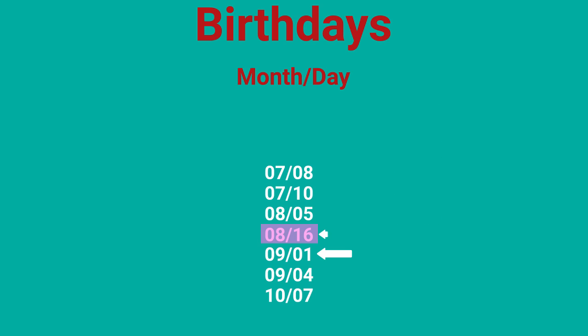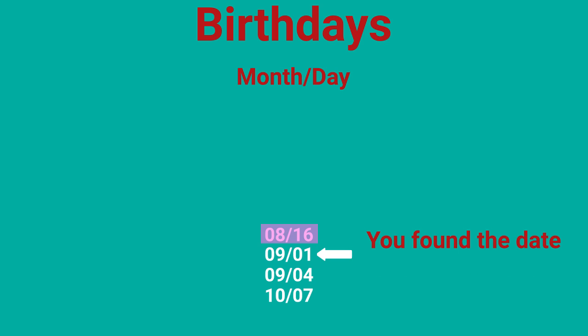Once you've found your birthday, you can just move along the list until you find someone with a different birthday than yours. If you reach the end of the list, then move along to the beginning of the list.